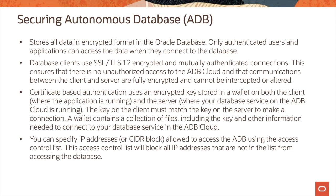You can specify IP addresses allowed to access the autonomous database using the access control list. This access control list will block all IP addresses that are not in the list from accessing the autonomous database.